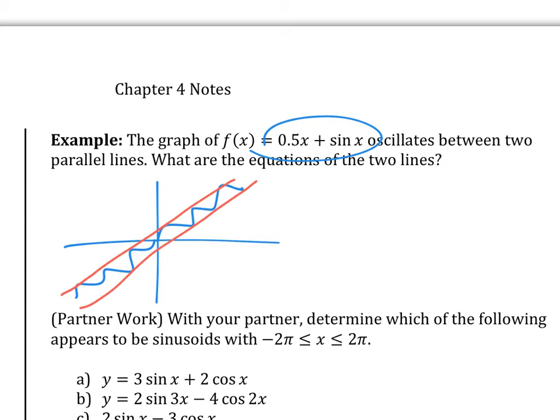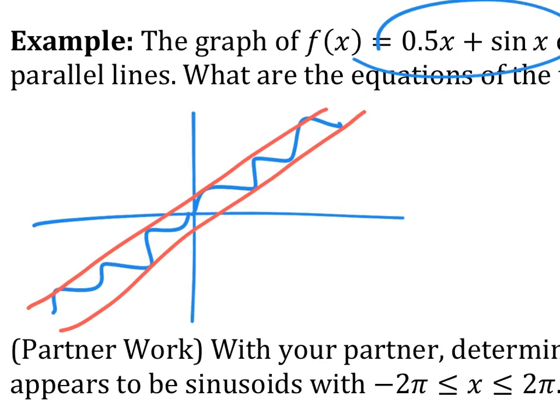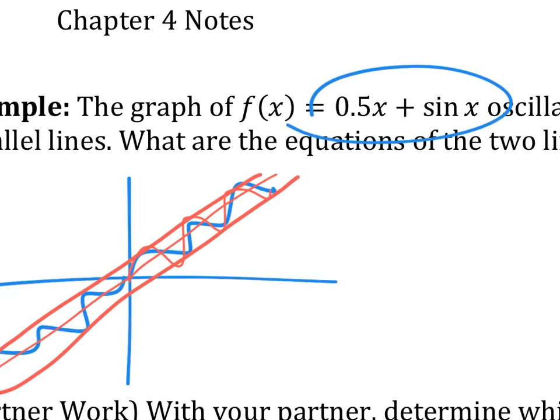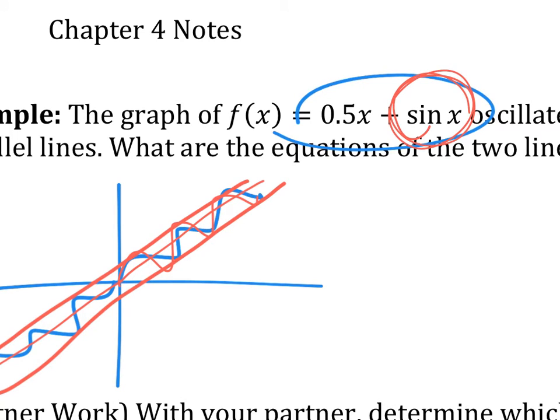You can think of something. Or if two people, like you can't think of anything, like talk to the people behind you. Okay, so we know that 0.5x, just 0.5x is going to be here. And what happens is it now has a sine x attached to it. So it's going to make it oscillate. And then when it oscillates, it's going to oscillate between negative one and one. So then the two lines that it's going to be stuck in between has to be 0.5x plus 1 and 0.5x minus 1.